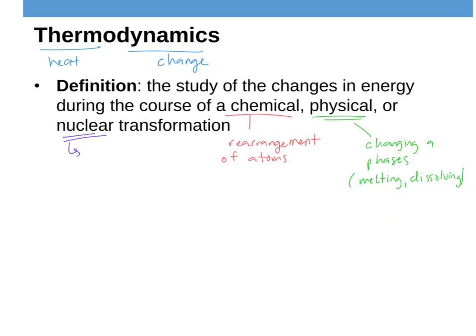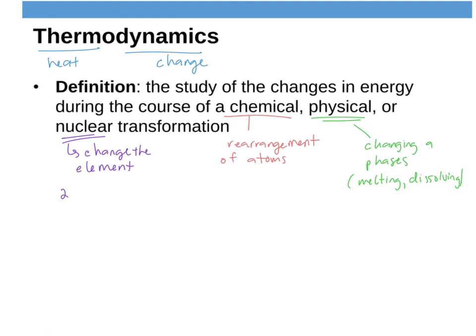And then lastly, nuclear — which is where you actually change the element itself. For example, taking two hydrogen atoms and turning them into helium. So nuclear stuff — we always think of like plutonium and uranium — but it's just changing the element in any way. We're going to use thermodynamics in all of these situations. Right now, we're going to start with physical and chemical changes and save nuclear for later. But any type of transformation is going to have a corresponding change in energy — that's what we want to take a closer look at.